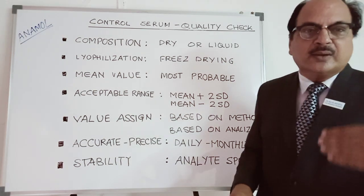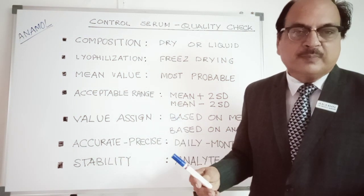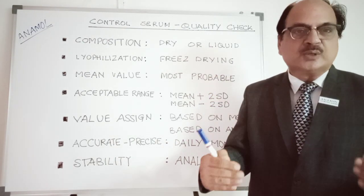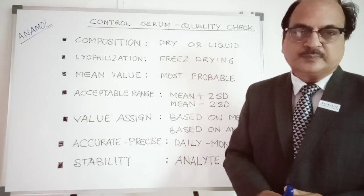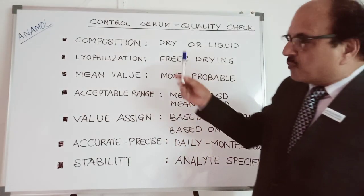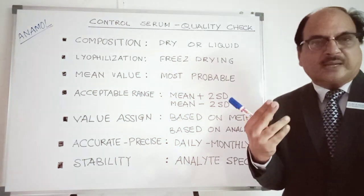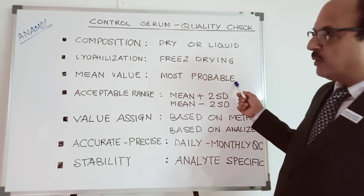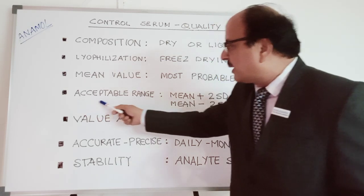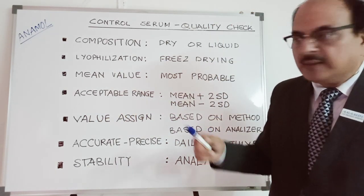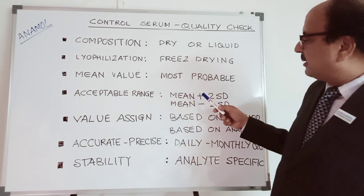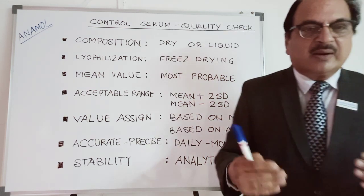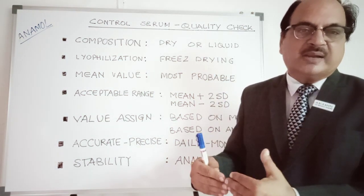Once ready, you can use it like a normal serum sample. It is called control serum because every analyte value is known and written down. When you assign a control serum value, there are two key terms: the mean value, also called the most probable value, and the acceptable range, which is mean minus two standard deviations to mean plus two standard deviations.